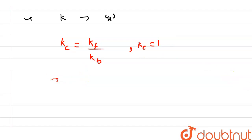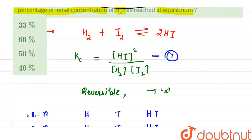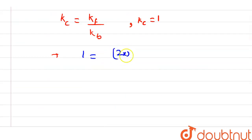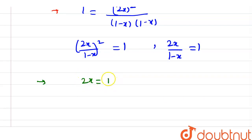Substituting into equation (1): 1 = (2x)² / [(1 − x)(1 − x)], which gives (2x)² / (1 − x)² = 1. Taking the square root of both sides: 2x / (1 − x) = 1, so 2x = 1 − x, giving 3x = 1, therefore x = 1/3.